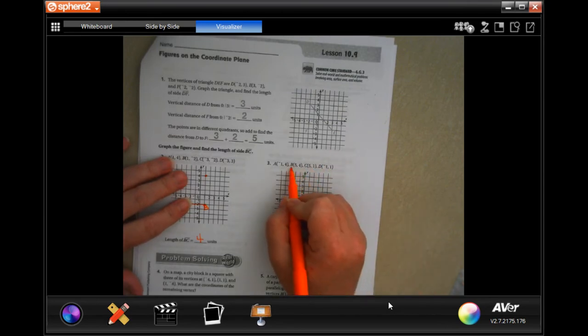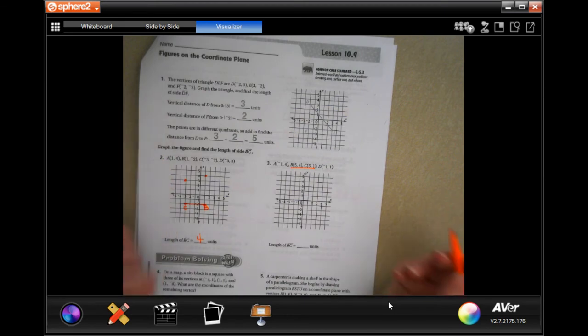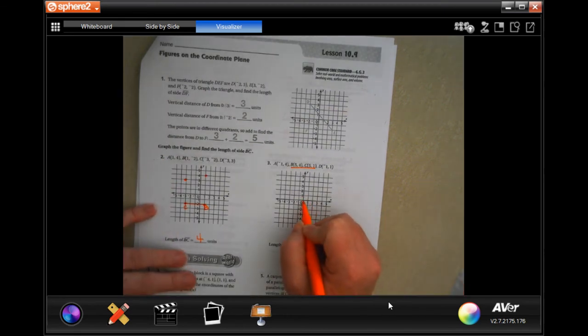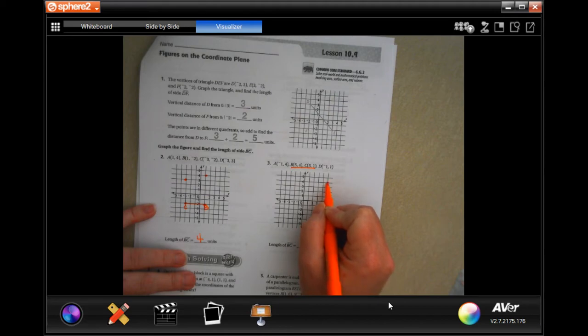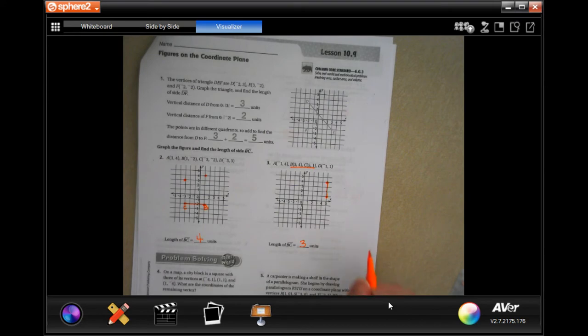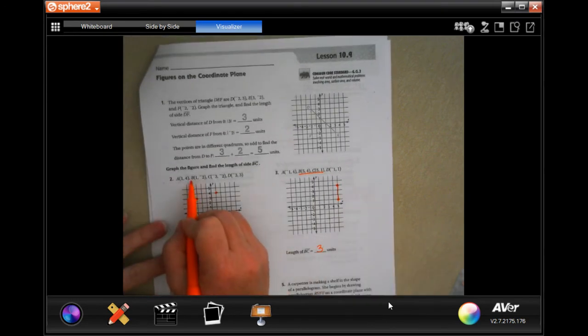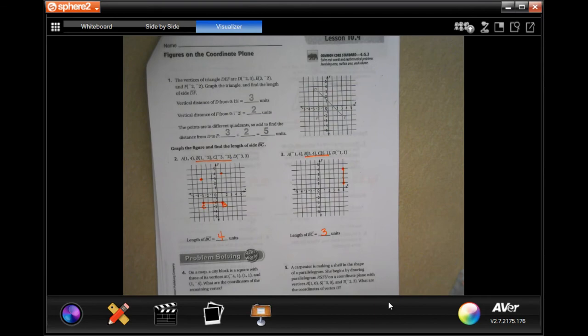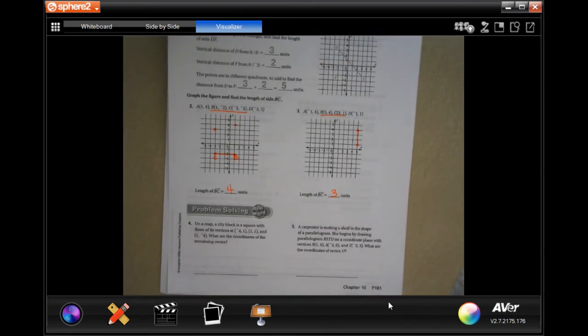So this one, I'm just going to go ahead and graph those too because I only need to know the length of B to C. Okay, so we're going to go over to 5 and up to 4, and we're going to go over 5 and up 1. So 1, 2, 3, 3 units, okay? Really all you had to do there was B and C. You didn't have to do the other ones, so my bad.